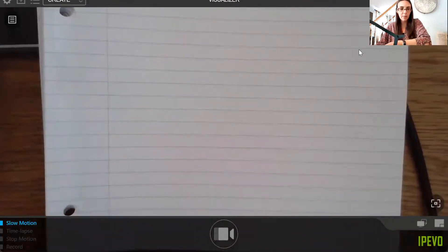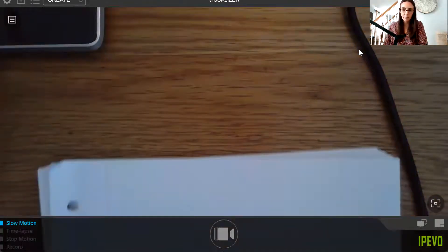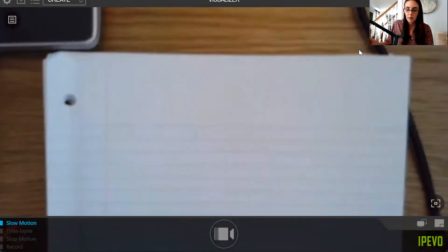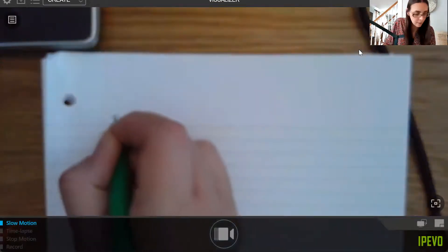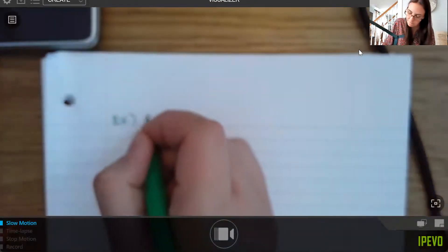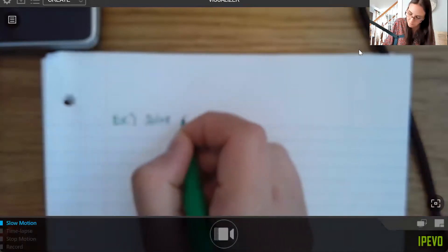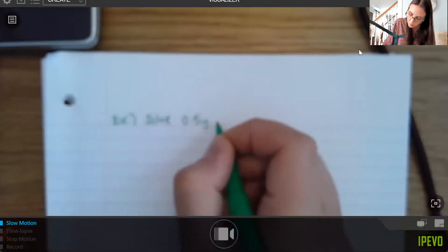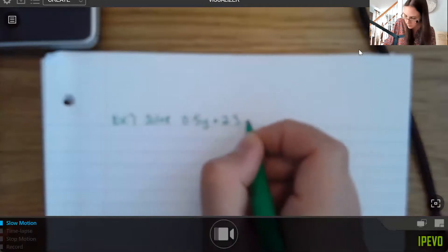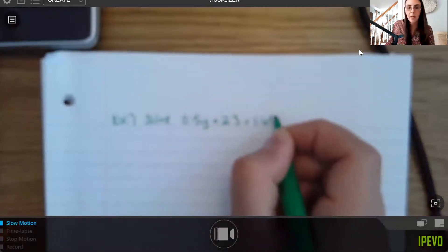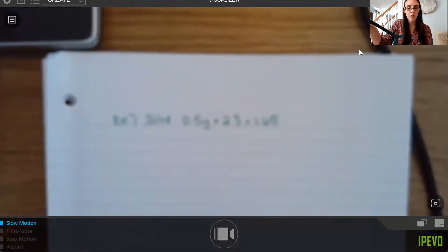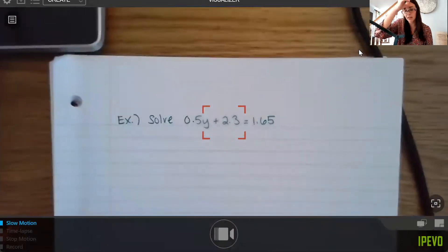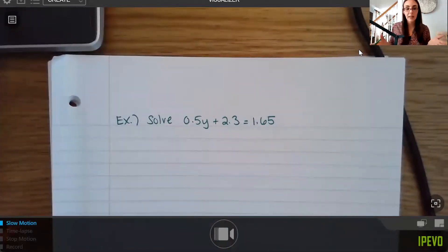I just want to do one more example here using this shortcut strategy. And again, I'm going to use that shortcut strategy where I don't feel like working with decimals. I want to cancel them out. I don't have any parentheses here. So that's good.